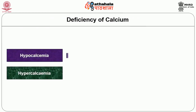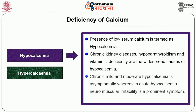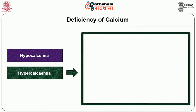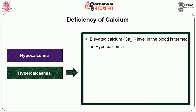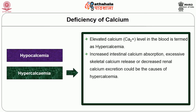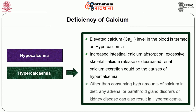Now we will see about the deficiency of calcium. Hypocalcemia is the presence of low serum calcium. Chronic kidney diseases, hypoparathyroidism, and vitamin D deficiency are the widespread causes of hypocalcemia. Chronic mild and moderate hypocalcemia is asymptomatic, whereas in acute hypocalcemia, neuromuscular irritability is a prominent symptom. In severe cases, tetany is observed. Hypercalcemia refers to elevated calcium levels in the blood. Increased intestinal calcium absorption, excessive skeletal calcium release, or decreased renal calcium excretion could be the cause. Any adrenal or parathyroid gland disorder or kidney disease can also result in hypercalcemia.